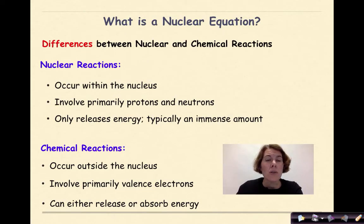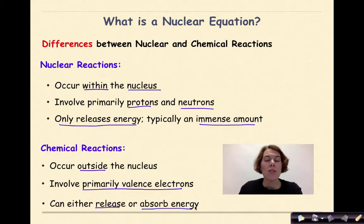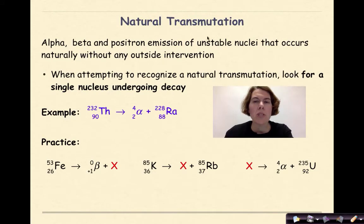There are some differences between nuclear and chemical reactions. In a nuclear reaction, it's only going to occur within the nucleus, it's going to involve primarily protons and neutrons, and it only releases energy, typically an immense amount of energy. Chemical reactions on the other hand occur outside the nucleus, they involve primarily valence electrons which we know are the electrons in the outermost shell, and chemical reactions can either release or absorb energy depending on the compounds involved.